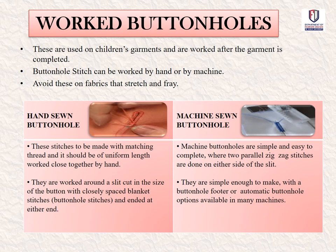For hand buttonholes, matching thread should be used and stitches should be of uniform length worked close together. They are worked around the slit — cut the size of a button — with close-spaced blanket stitches, ended at either end. Machine buttonholes are simpler and easier to complete, where two parallel zigzag stitches are done on either side of the slit, using buttonhole feet or automatic buttonhole settings available in many machines.